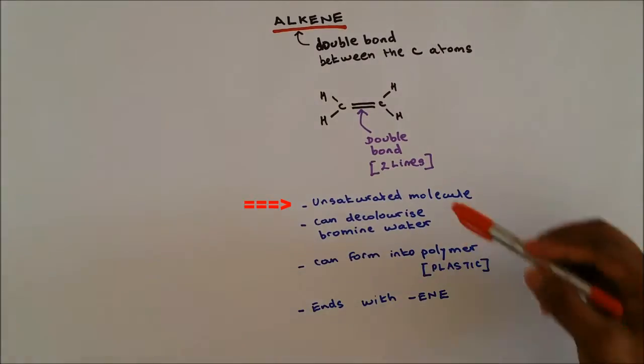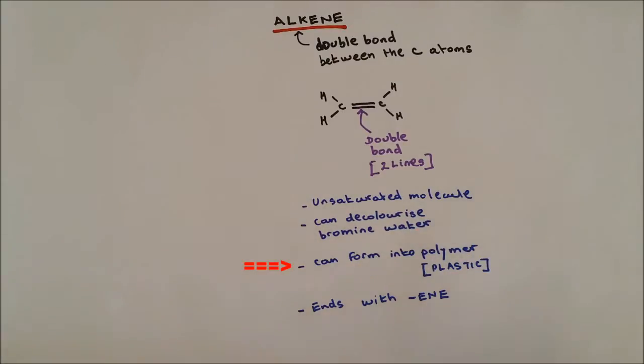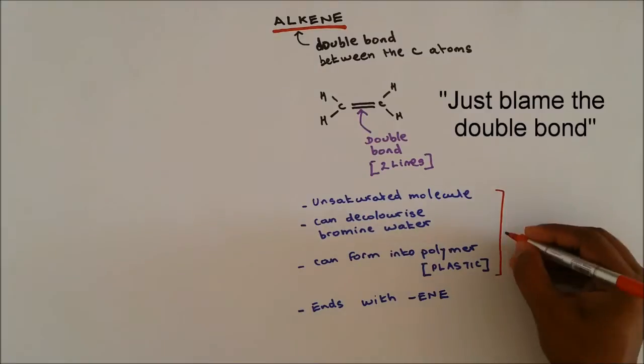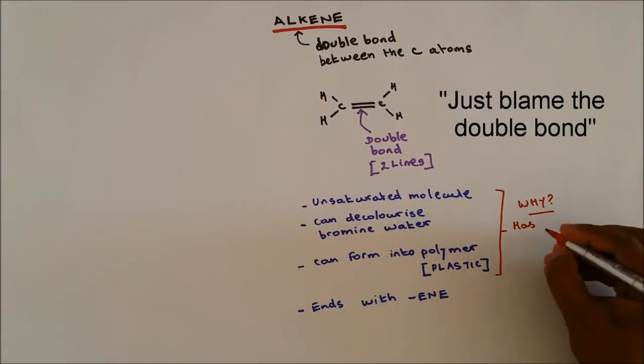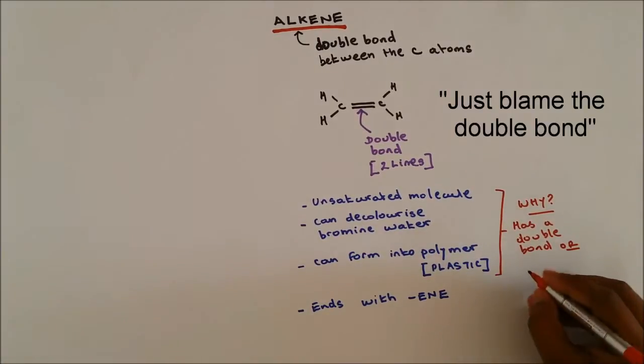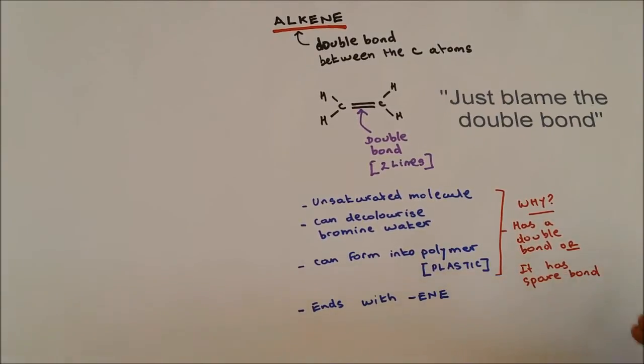The reason why it's called unsaturated and can decolorize bromine water and can form into a polymer is because it has a double bond. Or we could say it has a spare bond, so the spare bond can be broken down.